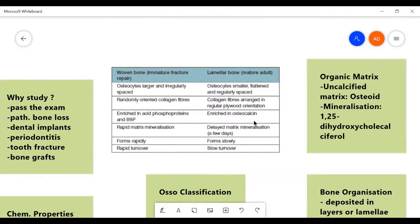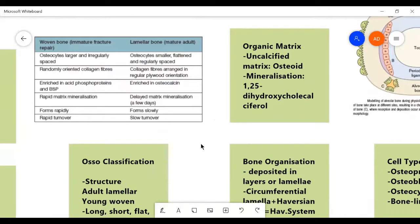In the lamellar bone, it forms slowly but has a slow turnover rate, but it has a much denser matrix. It has delayed matrix mineralization. Its collagen fibers have a regular plywood shaped orientation, so it is much tougher, rich in osteocalcin. And osteocytes are smaller, flattened, and regularly spaced.